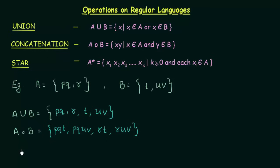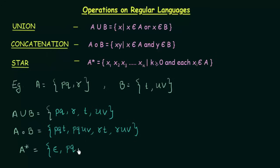The last operation is Star — A Star. In the Star operation there is only one set involved. A Star means we can take as many symbols from set A and join them together in any way we like. The elements of A Star would first include Epsilon — the empty string, which is part of A Star. Then we can write P, Q by itself, and R by itself. And we can join P, Q and R together.